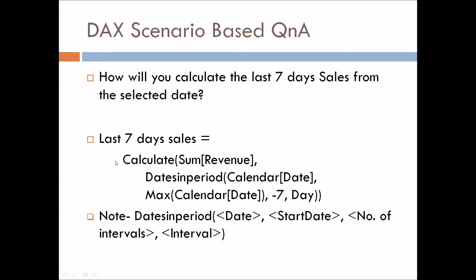So the full expression is: CALCULATE(SUM of revenue, DATESINPERIOD(calendar date, MAX of calendar date, -7, DAY)). In this way, you can answer this question.